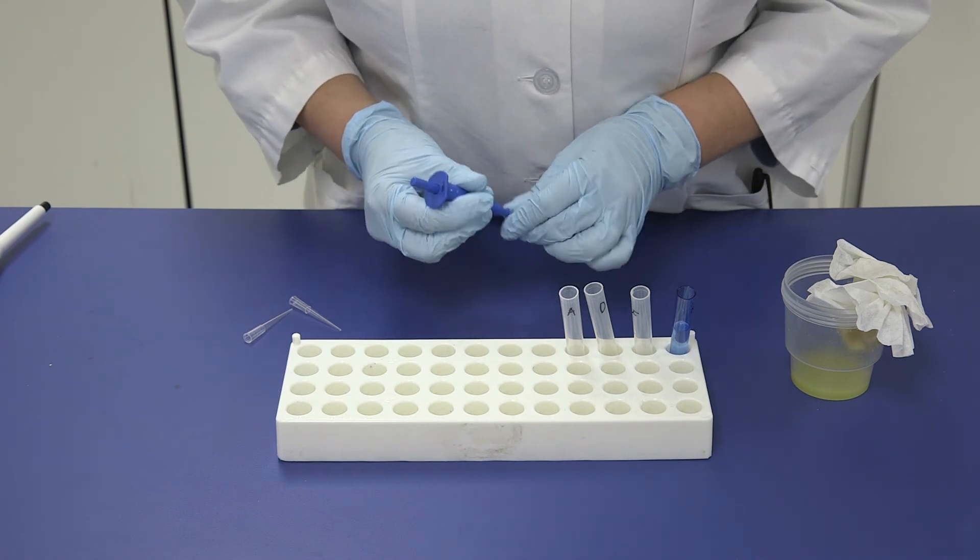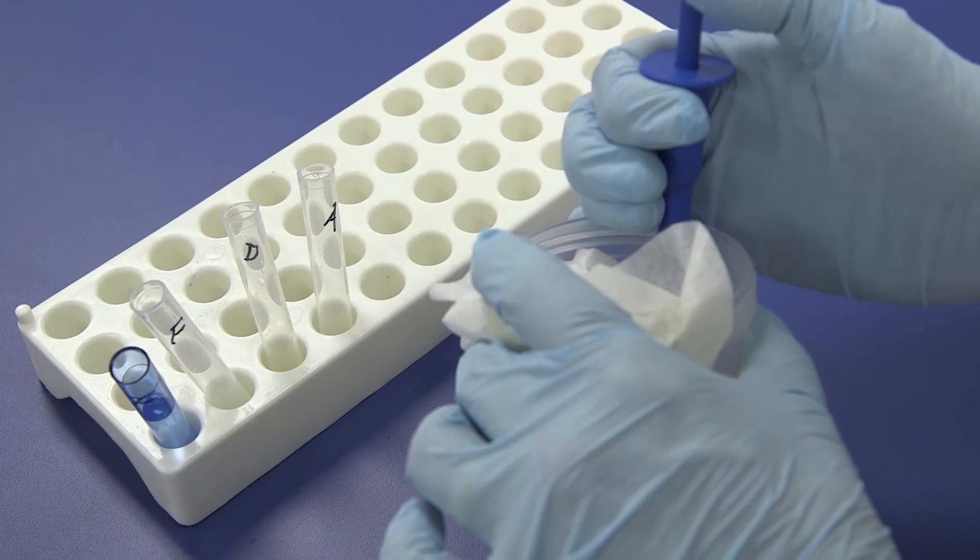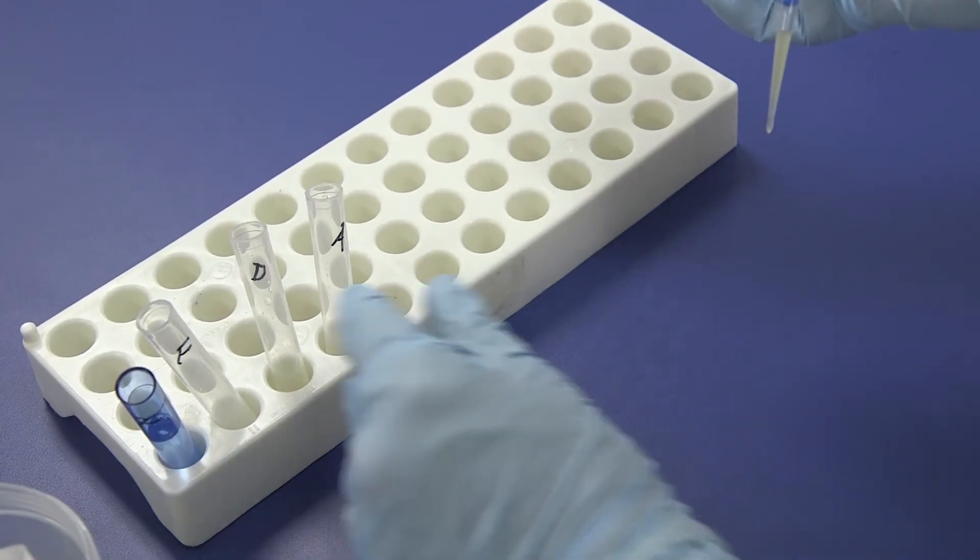Place a clean tip on the 100 microliter pipette, swirl the extract cup, and transfer one pipetteful of the clarified extract to the clear reaction tube labeled A.